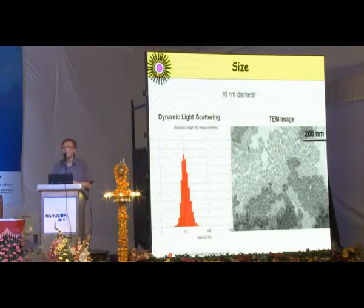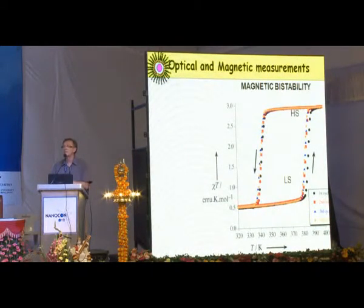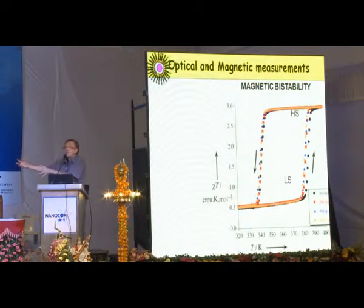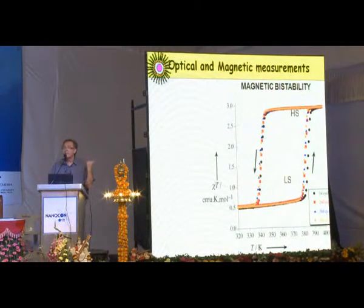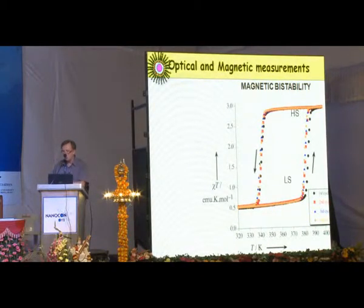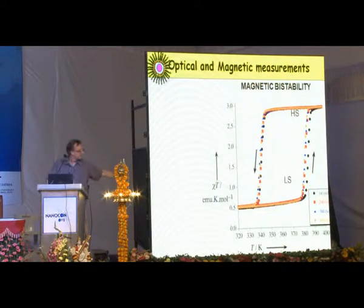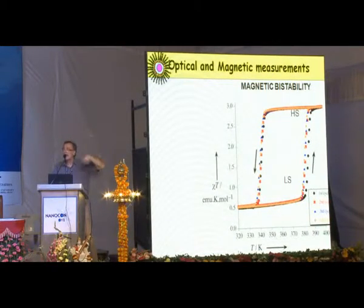You can see the nanoparticles by dynamic light scattering at around 10 nanometers, and also by TEM. Interestingly, these nanoparticles exhibit the same behavior as the bulk solid — even at 10 nanometers the system still presents the same spin crossover. The system has memory: the transition from low spin to high spin occurs at 380 Kelvin, above room temperature. You can cycle between low spin and high spin, and at an intermediate temperature of around 340 Kelvin, both states can coexist — giving a bistable system.